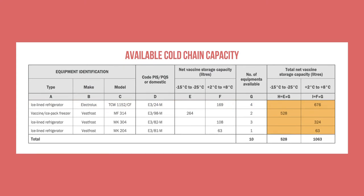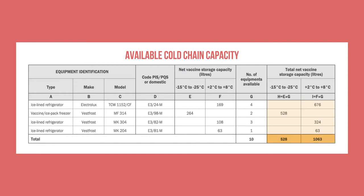There are four of this type of refrigerator, holding a total net volume of 676 litres. For each type of equipment, record the total net vaccine storage capacity in the appropriate temperature range column. Once you have done this for each type of equipment, add the volumes together for each temperature category. In this case, there is a total freezer capacity of 528 litres and a refrigerator capacity of 1,063 litres spread over 10 pieces of equipment.